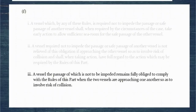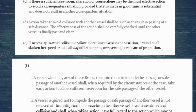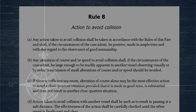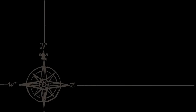The third paragraph confirms: a vessel the passage of which is not to be impeded remains fully obliged to comply with the rules of this part when the two vessels are approaching one another so as to involve risk of collision. So in our example, although the green vessel is meant to not impede the passage, the container ship remains fully obliged to comply with the rules — it's still a crossing situation, and the container vessel is still the give-way vessel, even though the green one should allow her sufficient sea room. That brings us to the end of Rule 8. Hopefully you've found the information useful — thumbs up if so, leave any questions or comments below, and hit subscribe to stay up to date. Until next time, thank you for watching, and goodbye.